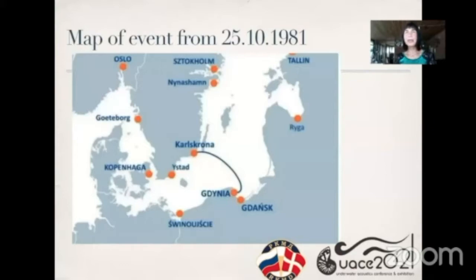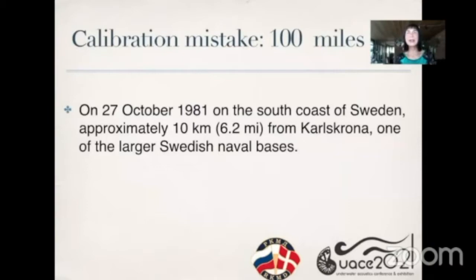On October 25th, 1981, Russian submarine C-363 departed from Świnoujście, close to Gdynia. The planned route was to pass Bornholm and then proceed to St. Petersburg via Klaipeda. However, instead of Bornholm, they arrived at Karlskrona. On October 27th, the submarine surfaced on the south coast of Sweden, approximately 10 kilometers from Karlskrona — one of the largest Swedish naval bases. The navigational error was on the order of hundreds of miles.